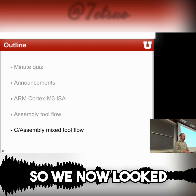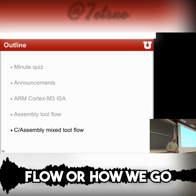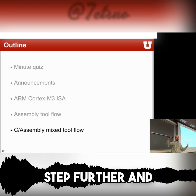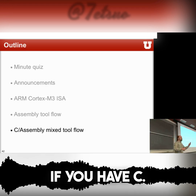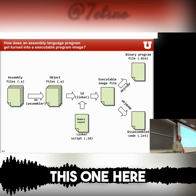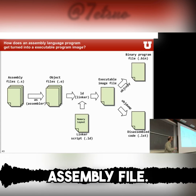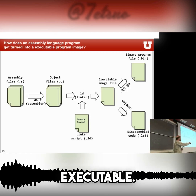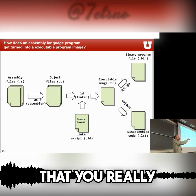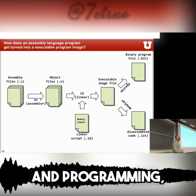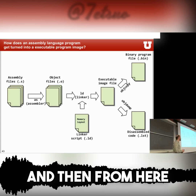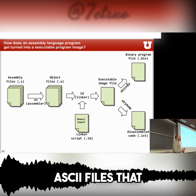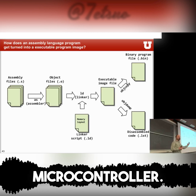We looked at the C assembly flow — how we go from assembly into our binary files. We have the assembly file, use the assembler, get an object file, run the linker with a linker script, and generate the executable. This is the big container with all the information you really want for debugging and programming. From there, you can use objcopy to generate binary files, hex files, or ASCII files that your tool uses to program into your microcontroller, or you can disassemble the whole thing.